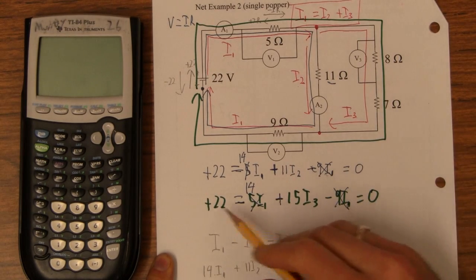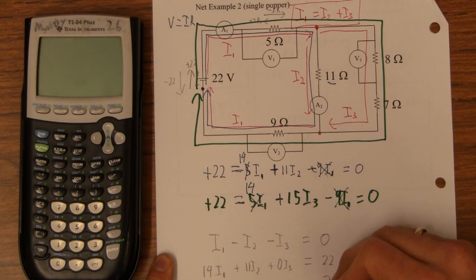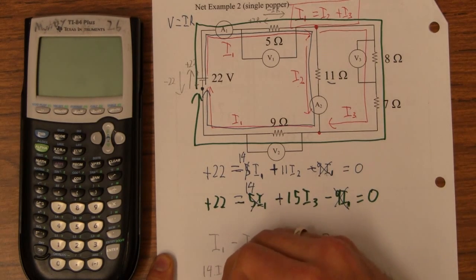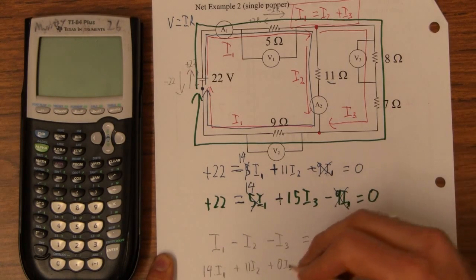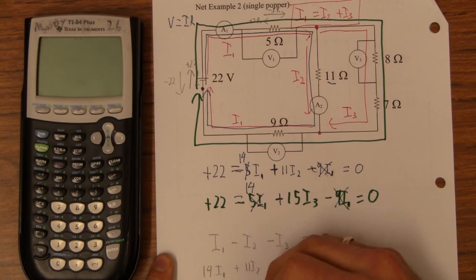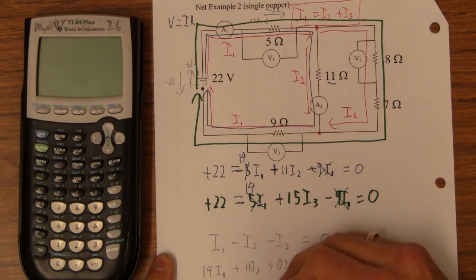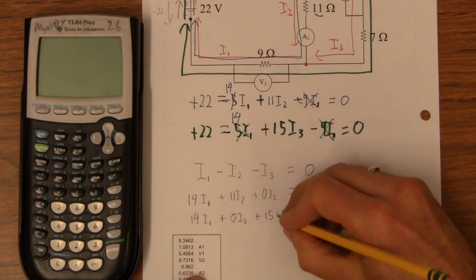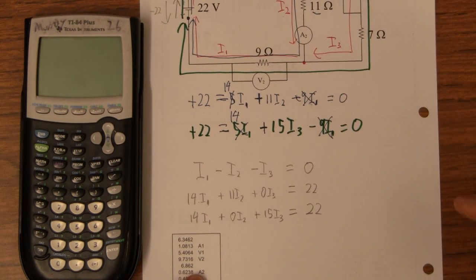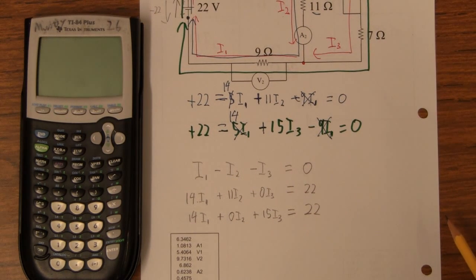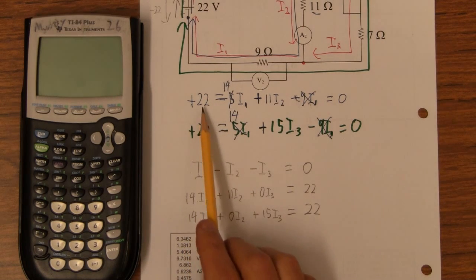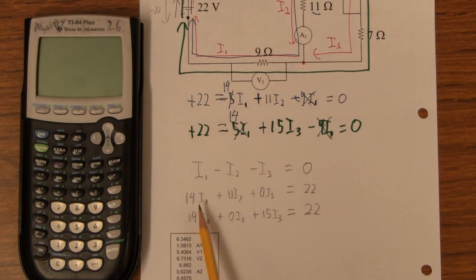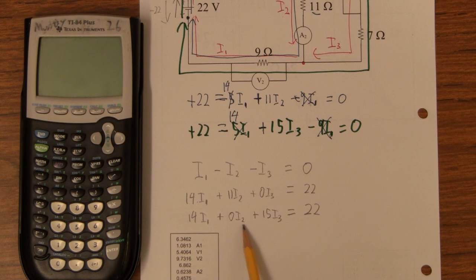And then for this guy here, I can do the same thing. I'm going to put the 22 over there. I've got 14 I1. And then there aren't any I2s on that one. Plus 15 I3. So I've got, I did this guy here. 22, 14, 14 I1, 11 I2, and no I3s. 14 I1, no I2s, 15 I3s.